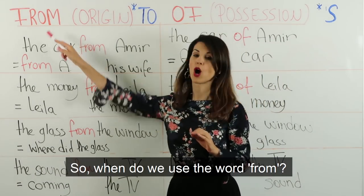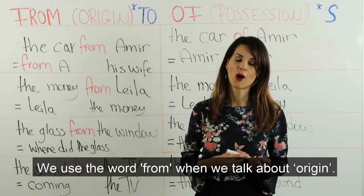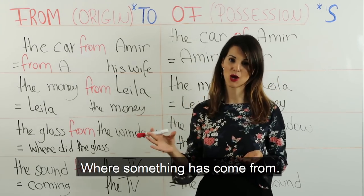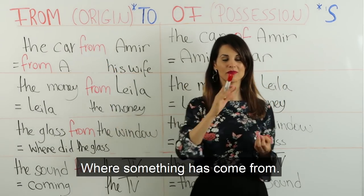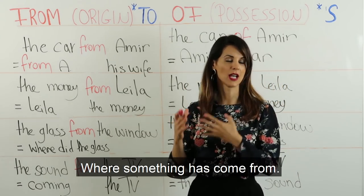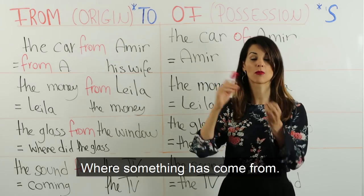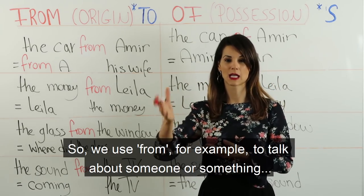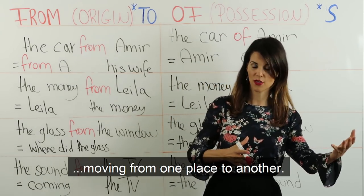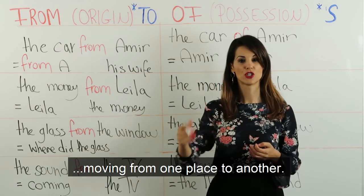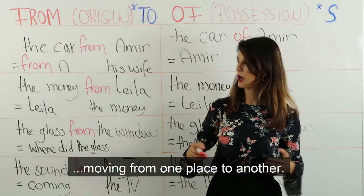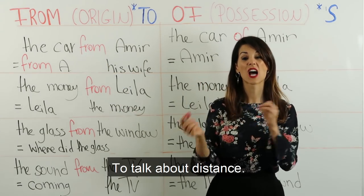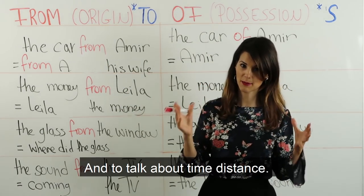So when do we use the word 'from'? We use 'from' when we talk about origin — where something has come from. منستعمل كلمة 'from' لما منكون عم منحكي عن أصل شي أو شخص أو مصدر شي أو شخص. So we use 'from' to talk about someone or something moving from one place to another, to talk about distance, and to talk about time distance.